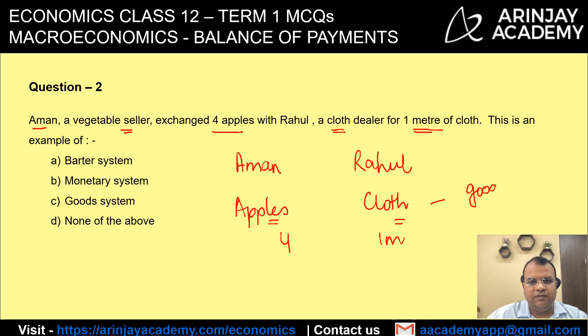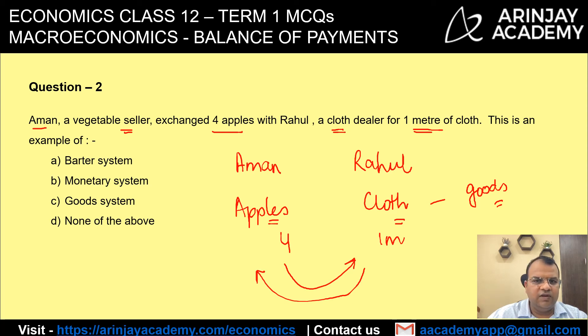This means there is an exchange of one good for another good. The system for this exchange is called the barter system, therefore the correct answer is option A.